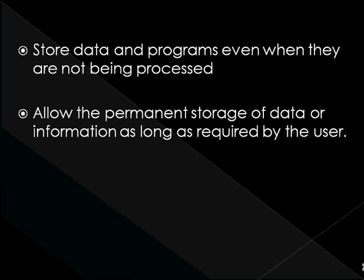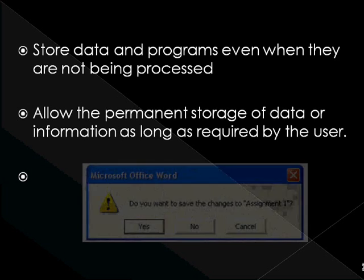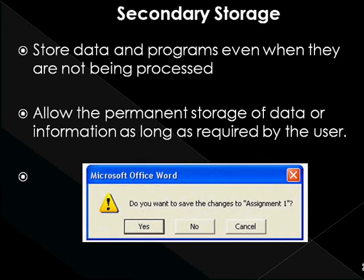For example, you may want to save an assignment that you will edit or print at a later time. By clicking yes, you can save it to a secondary device and then access it later. The information stored in a secondary device is non-volatile — that is, information stored is still present even if power is turned off.